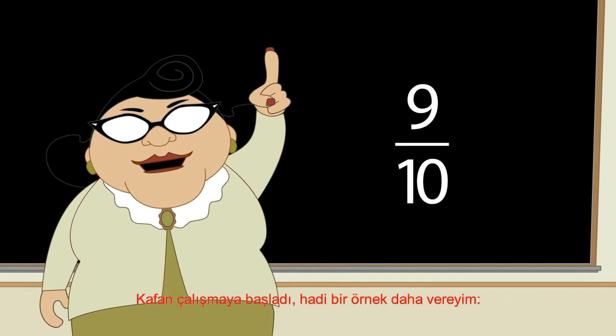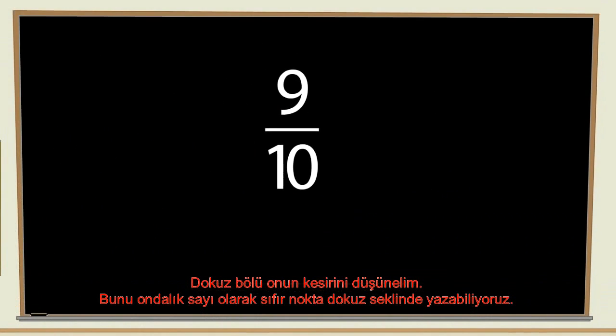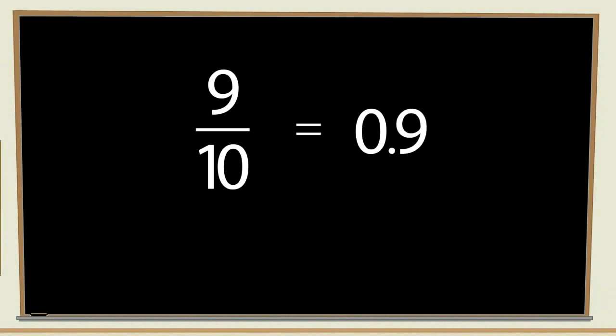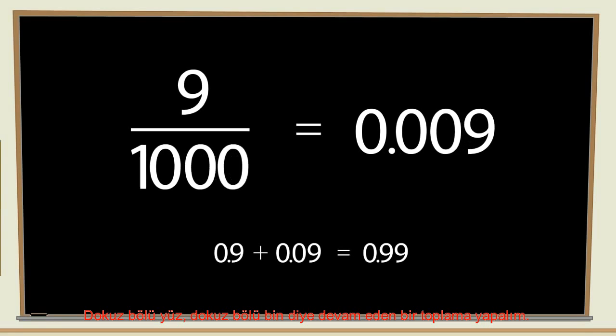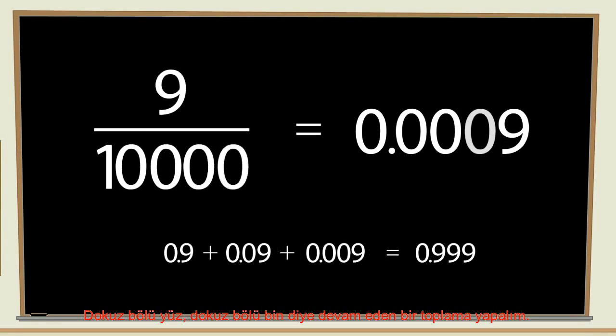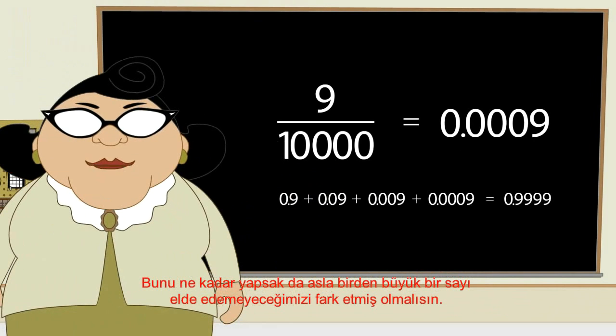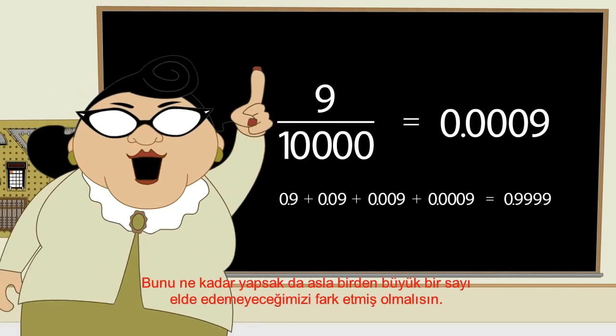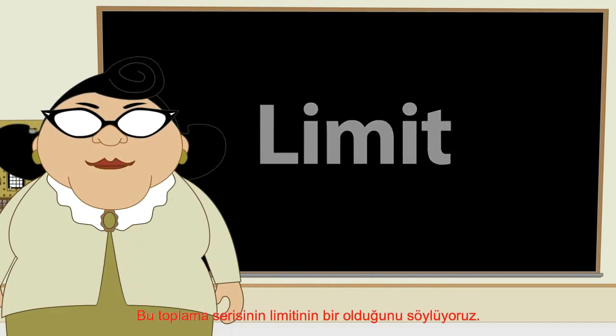I'll give you one more example. Let's take the fraction 9 tenths, which you can write as the decimal number 0.9. Now let's add 9 hundredths, and 9 thousandths, and so on. As you can see, we can keep doing this as long as you like. But you will never get a number bigger than 1. We say the limit of this series of additions is 1.